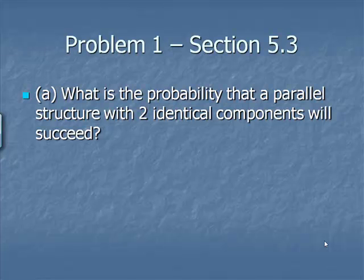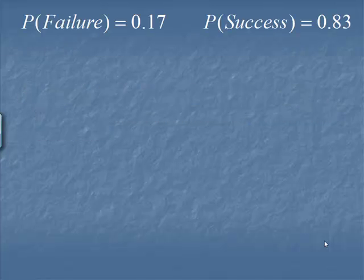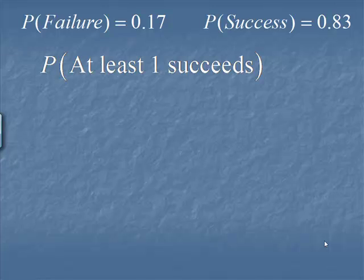Part A. What's the probability that a parallel structure with two identical components will succeed? I've gone ahead and recorded the probabilities at the top of the screen. The probability a component fails is 0.17. The probability it succeeds is 0.83. And we're looking for the probability that at least one of them succeeds. That way, the entire process will be considered a success.